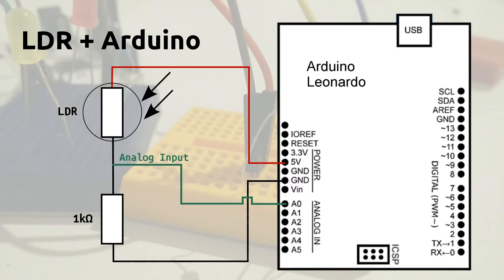In order to read the value from the Arduino, we are going to connect an analog input between the two resistors.